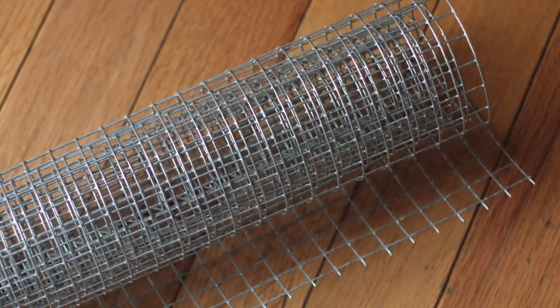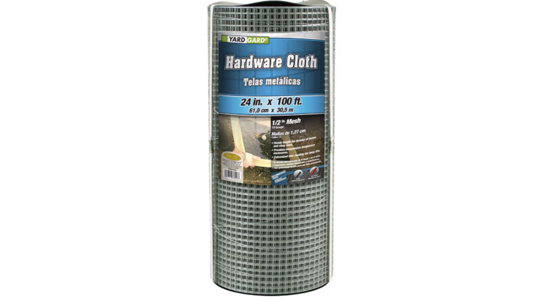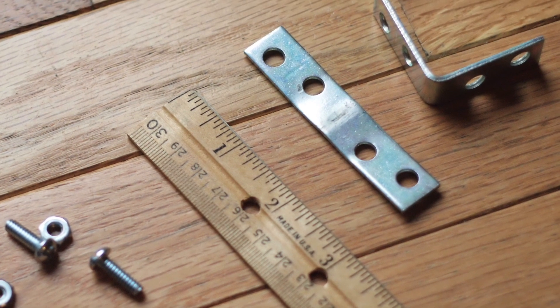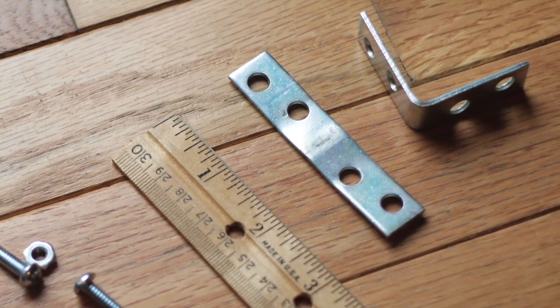I started with hardware cloth. You can get big rolls of it at Lowe's for like five bucks. I also used a couple small nuts and bolts and some angle brackets, one of which I pounded flat with a hammer.